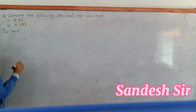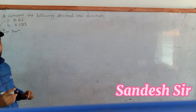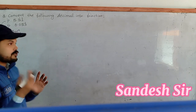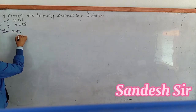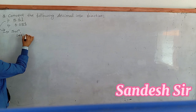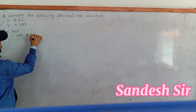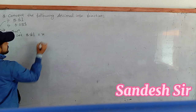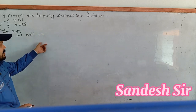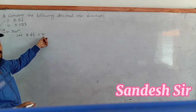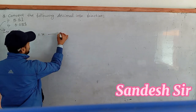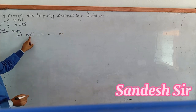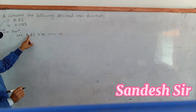Now, the first solution of the fraction is this equal value. Let's say 8.81 equals x. At each point, it is an equal value because the digits will repeat.